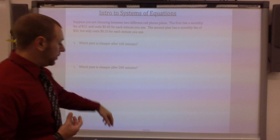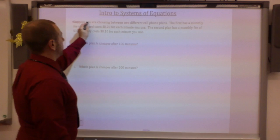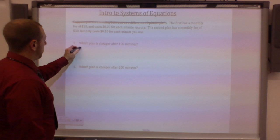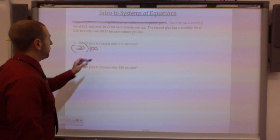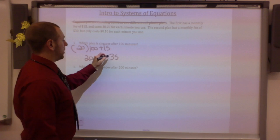So which plan is cheaper after 100 minutes? Well, let's figure this out. So we can take our first one, we used 100 minutes. The first monthly fee of $15 costs 20 cents each minute you use. So we would say 0.20 times 100, right? The minutes you use times that, plus 15. That's my operating cost. So 100 times 0.20 is 20, plus 15, that's $35.